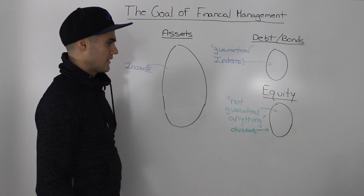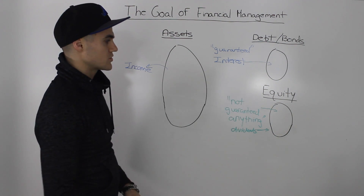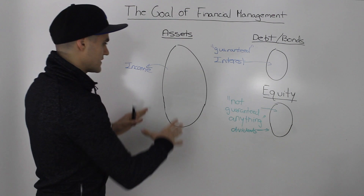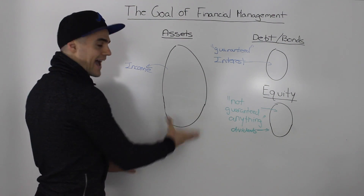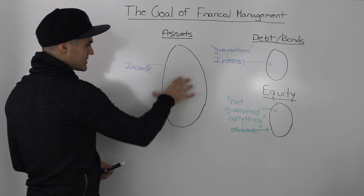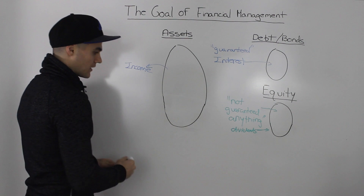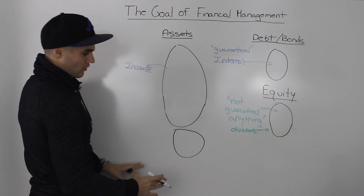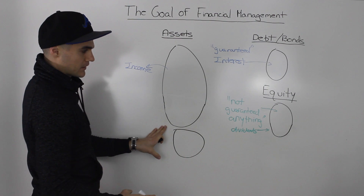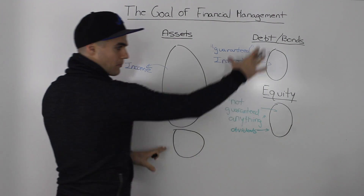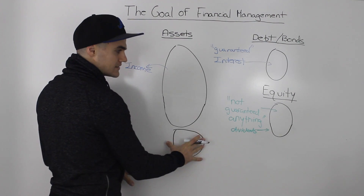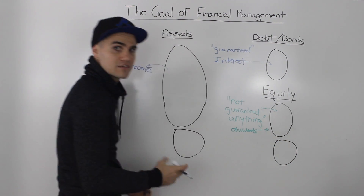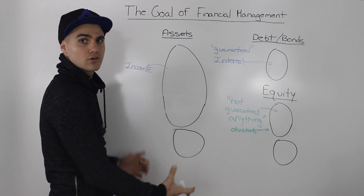Keeping that in mind and going back to the equity holders — the only way equity holders make money is if the company grows, or if the assets of the company grow. So if we make some income and we're able to increase our assets, that additional growth of the company has to balance out on the right side, and that additional growth goes to the equity holders.